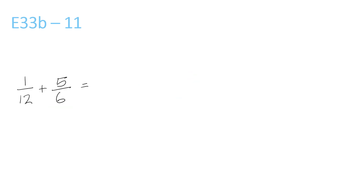Finally, 12 and 6 both go into 12. 6 times 2 is 12, so 5 times 2 is 10 over 12, plus the 1 over 12 that stays the same. Now 1 plus 10 is 11 over 12. I hope this helped. If you have any comments on other worksheets or questions you want me to do, I'll make sure to do them — thank you for watching.